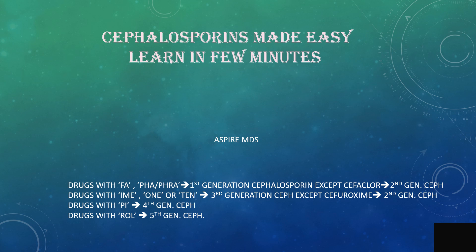In the first generation, all drugs that contain the syllables FA, PHA, or PHRA belong to the first generation Cephalosporins. The only exception is Cefaclor, which is a second generation Cephalosporin. Another trick: every first generation drug has 'Cepha' in its name, except Cefaclor.